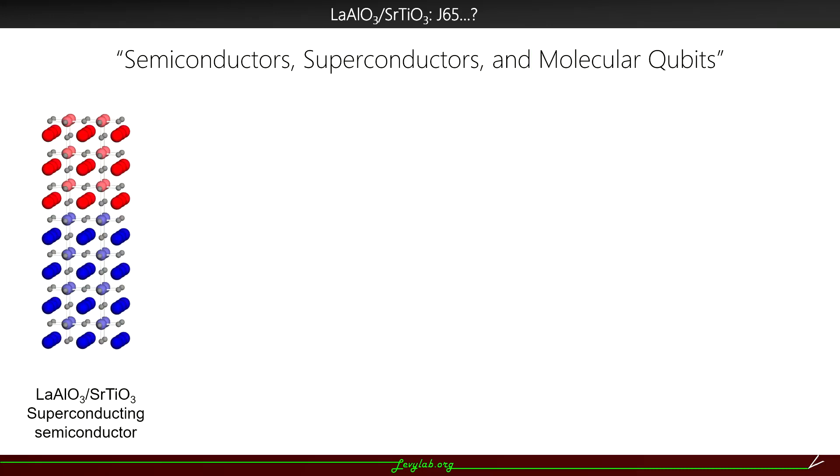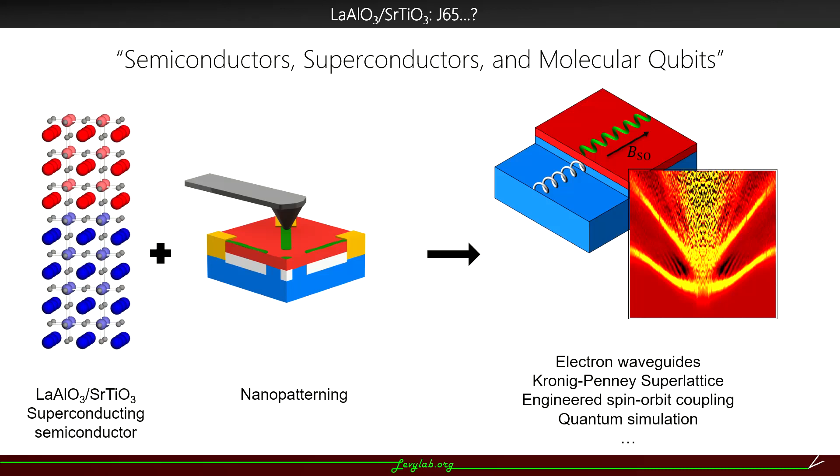Well, we're going to start with our superconducting semiconductor, that is lanthanum aluminate grown on strontium titanate. We're going to introduce nanopatterning via conducting atomic force microscope lithography, which is going to give us the ability to create structures which we can think of as molecular building blocks that we can use to create electron waveguides, superlattices in those waveguides, engineer their spin-orbit coupling, and build artificial quantum systems that we can think of as a quantum simulation platform.